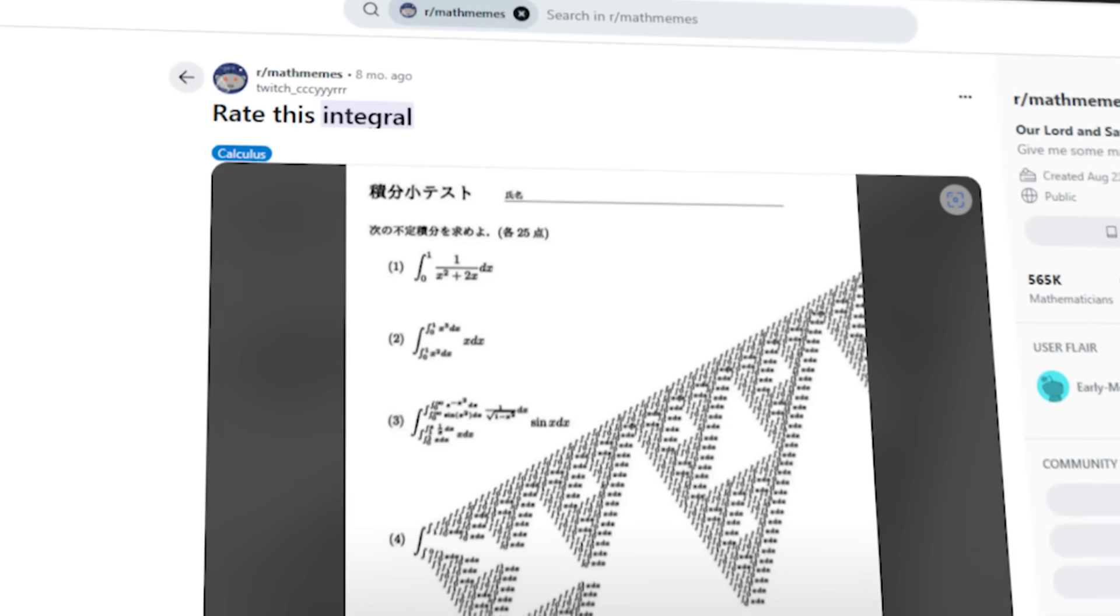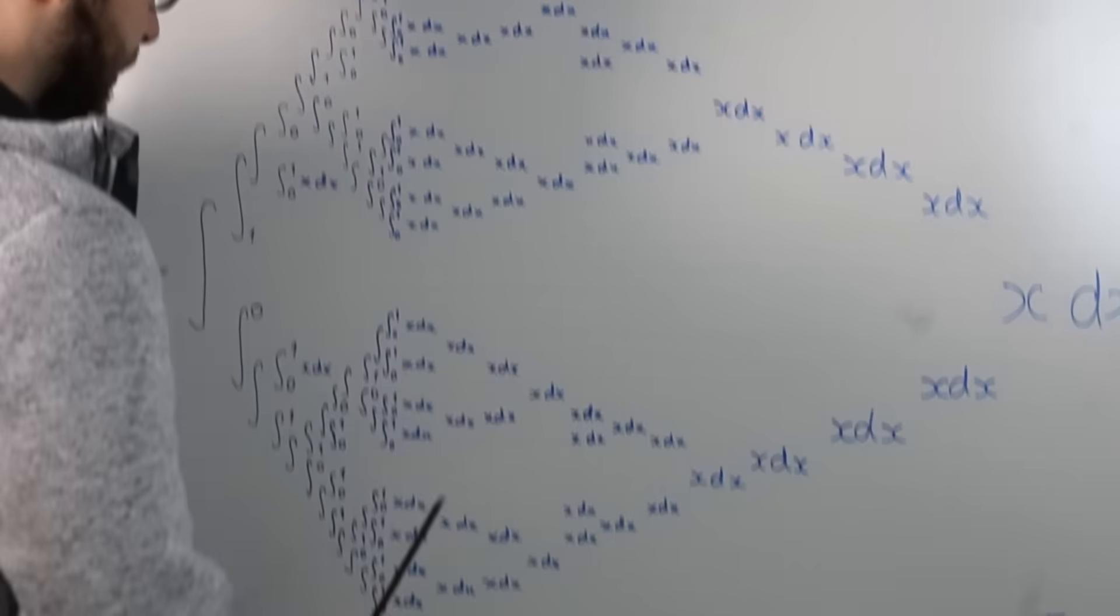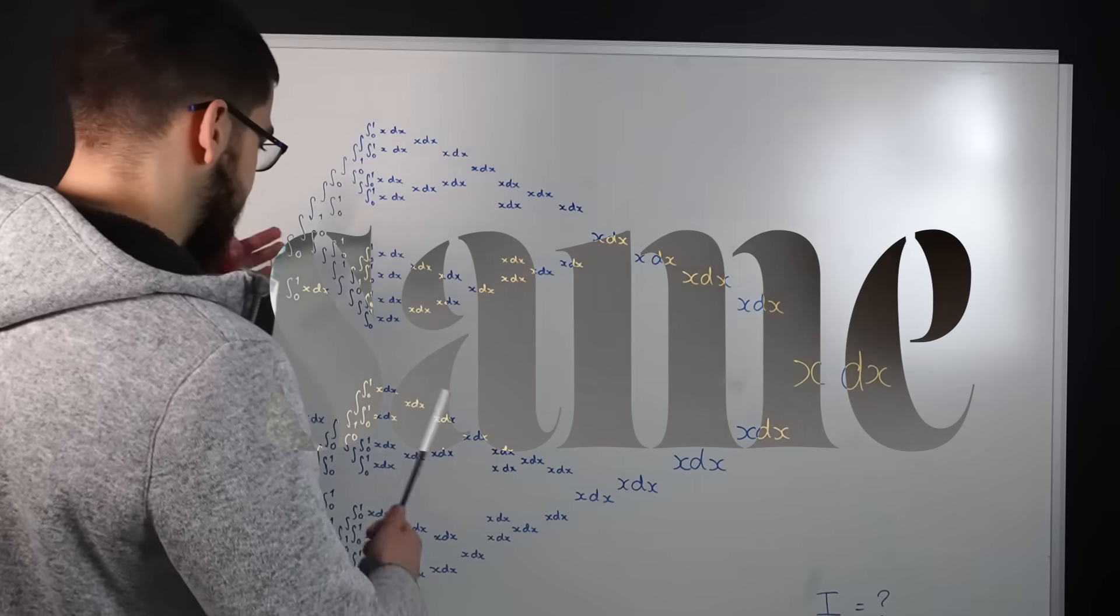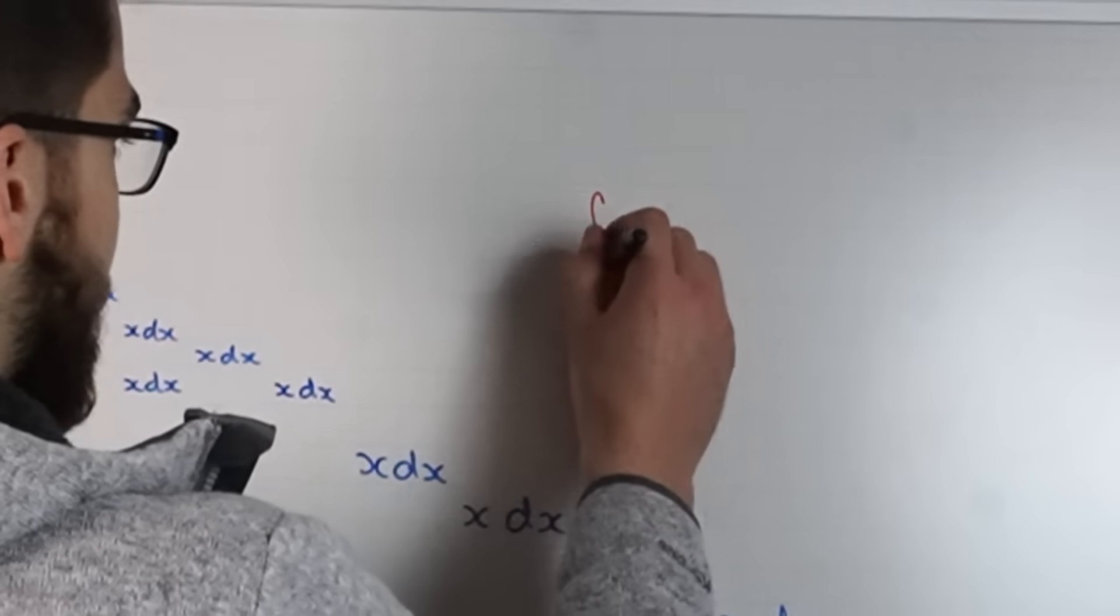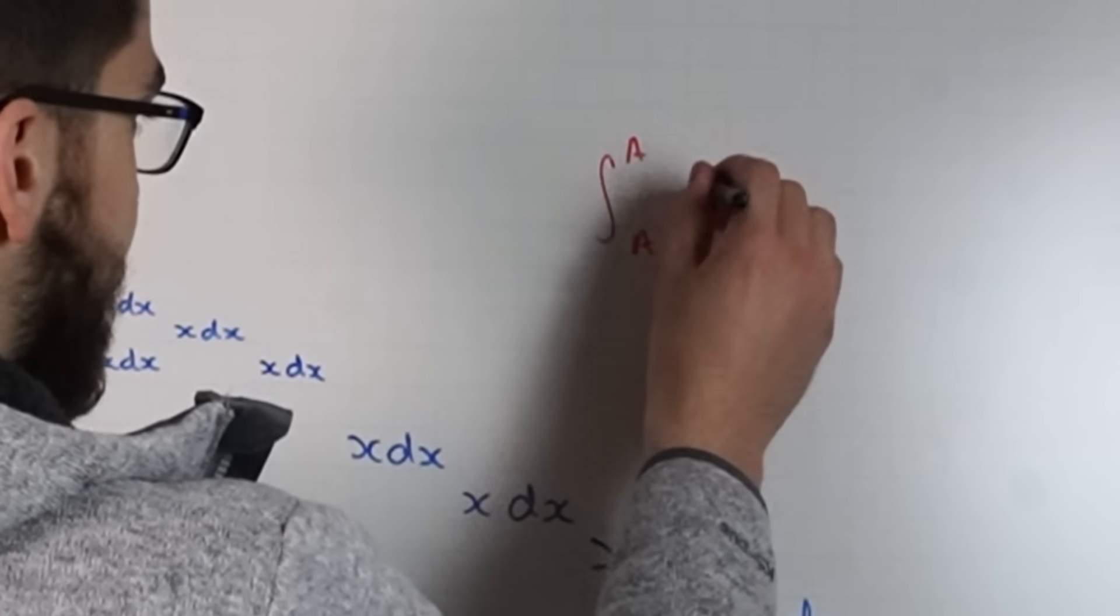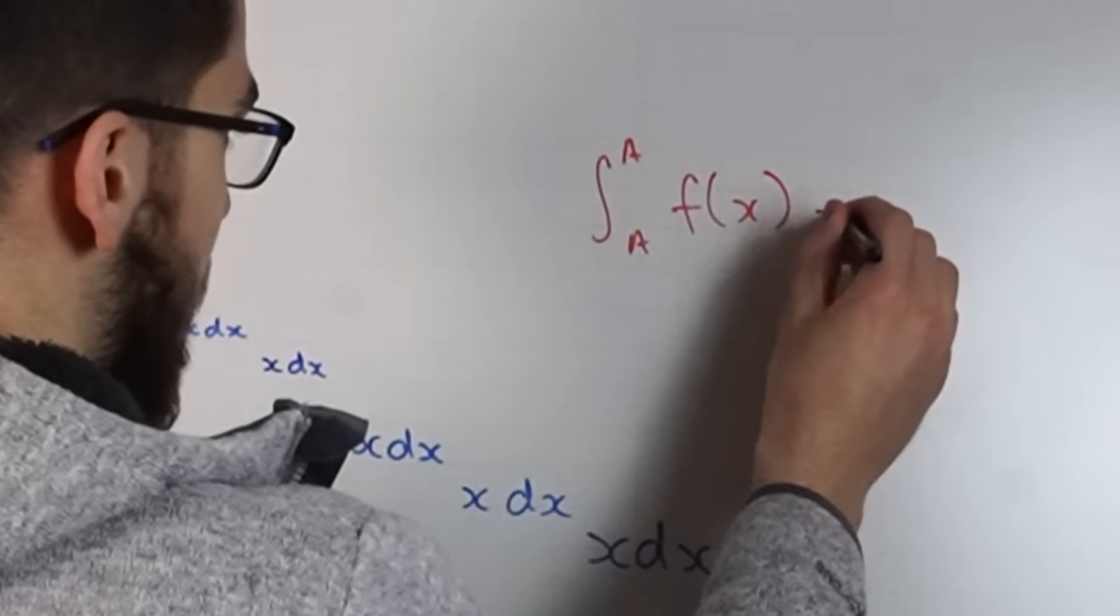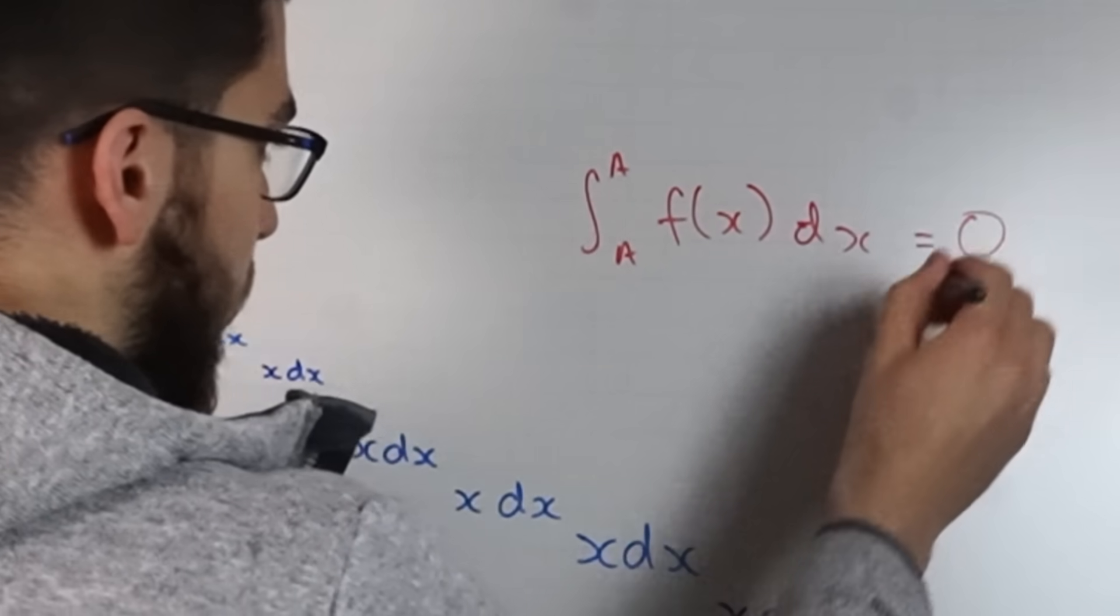This is a question which showed up on the r slash maths subreddit and many people said well surely the top and the bottom are the same because they're symmetrical and since the integral from a to a of f of x dx is equal to zero, this whole thing should equal zero.